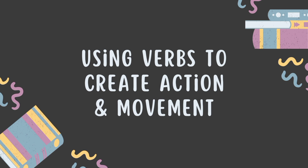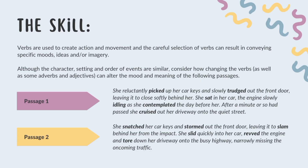Next, we have using verbs to create action and movement. In this area, we start using strong and powerful verbs which describe our actions and movements. This is an easy way — for example, we say: 'She snatched her car keys and stormed out the front door.' These words make the writing strong and powerful, which is why we use strong verbs.